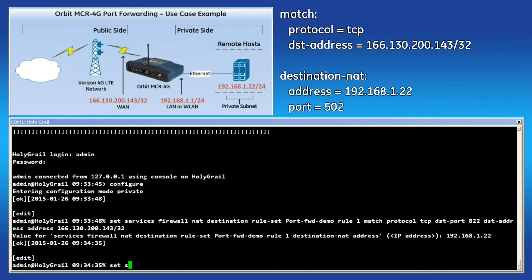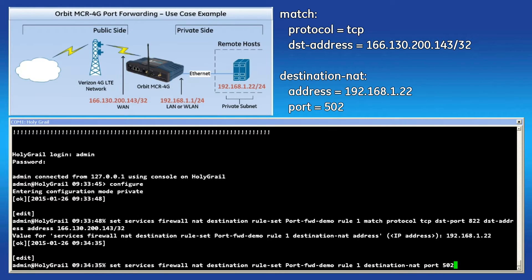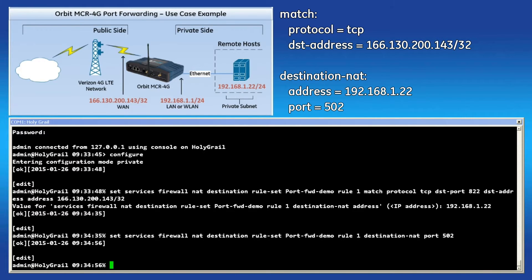The final bit to configure is the destination NAT port. Enter this command and set the forwarding port to 502. To verify everything is set up correctly, issue a show command on the NAT rules.